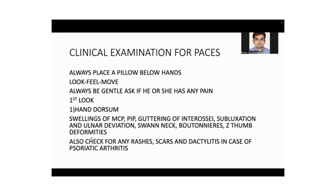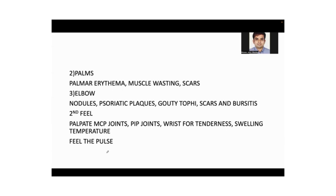How to examine a patient with any rheumatological condition including rheumatoid arthritis: always place a pillow below the hands. The steps are look, feel, and move — always be gentle and ask if there is any pain. Look at the dorsum of the hands for swelling of the MCP and PIP joints, any guttering of the intrinsic muscles, subluxation, ulnar deviation, swan neck or boutonniere deformity, or Z-deformity. Check for rashes, scars, and dactylitis — seen in psoriatic arthritis. Then turn the palms over to check for palmar erythema, muscle wasting, and scars.